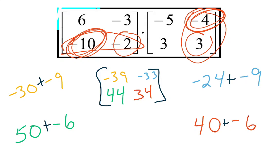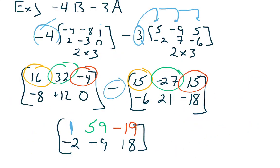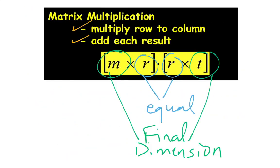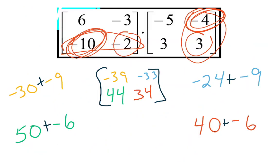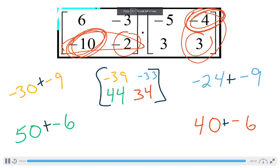That's matrix multiplication — you'll know it's matrix multiplication when you have two matrices with a product sign between them. That's different from what happened earlier when we just distributed a single number, which is called scalar multiplication. Matrix multiplication uses this row-column strategy. There are homework problems in a PDF you can click on — give those a shot, and we'll add a little bit more to matrices next time.